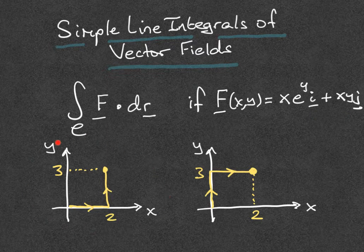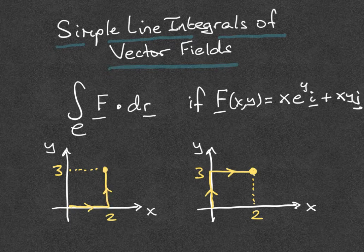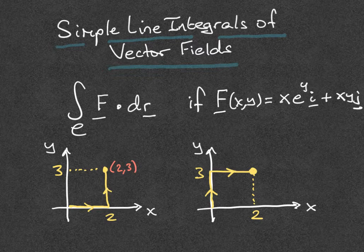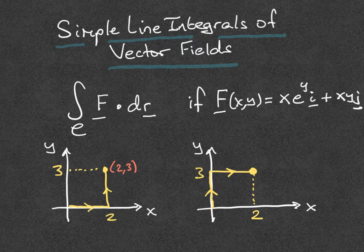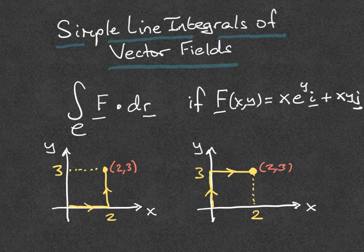First, I'm going to look at a path going from the origin to the point (2,0) and then to the point (2,3). After that, I'm going to calculate the line integral of the same vector field but over a different path, also starting at the origin and also ending at (2,3), but following a different route. We're going to see that we obtain a different value.